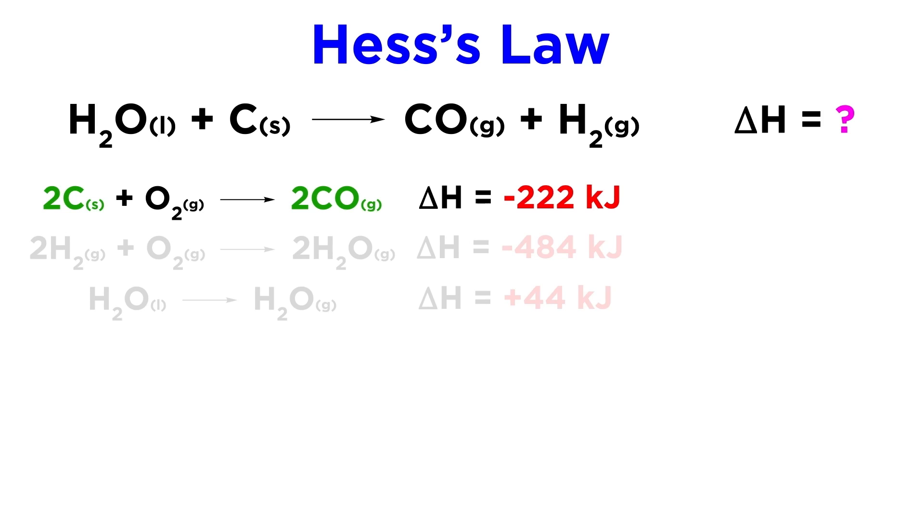Let's see how we need to manipulate the given information. To start, we see that this first equation has both carbon and carbon monoxide, but it has two of each. The equation in question has only one of each, so let's cut this one in half, so that the coefficients are one, one half, and one, and we can cut the delta H in half as well.